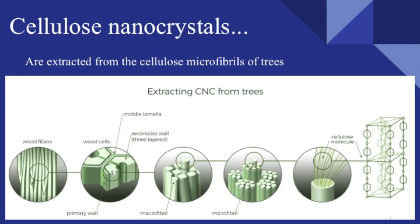More specifically, cellulose nanocrystals are extracted from the cellulose microfibrils of the tree. The process of extracting cellulose nanocrystals from trees can be seen in the diagram. This illustrates the magnification of wood fibers to the wood cells, which includes the primary wall, middle lamella, and the secondary wall, to the macrofibril, to the microfibril, which is composed of cellulose and glycoproteins, and finally to the cellulose molecule.